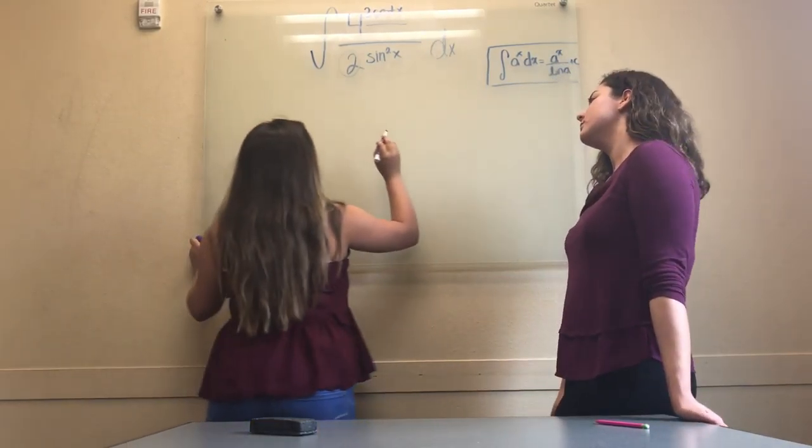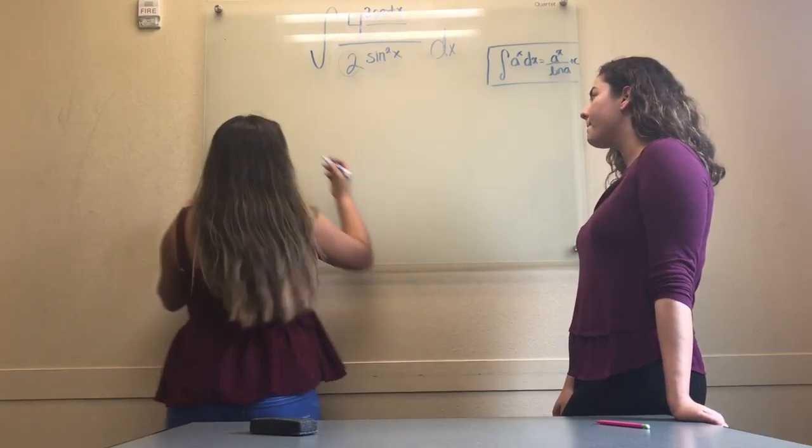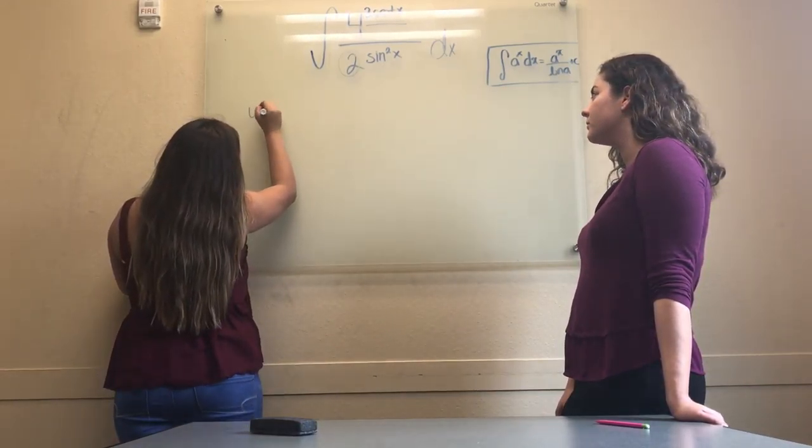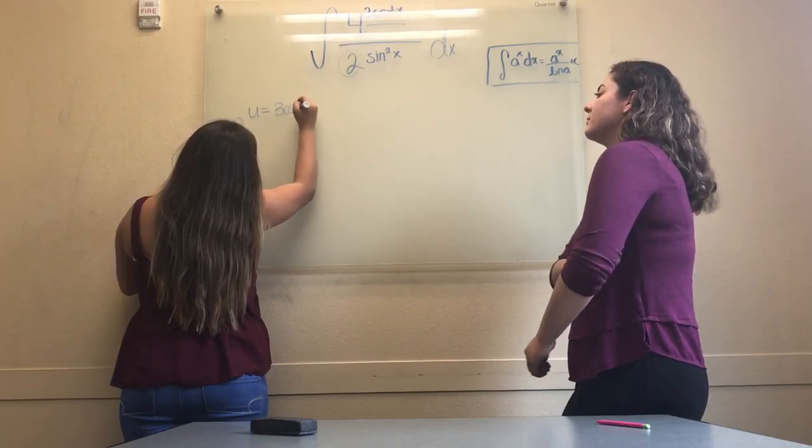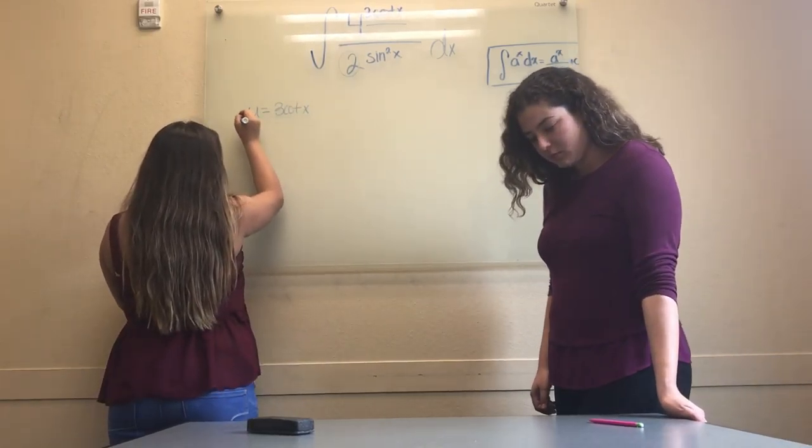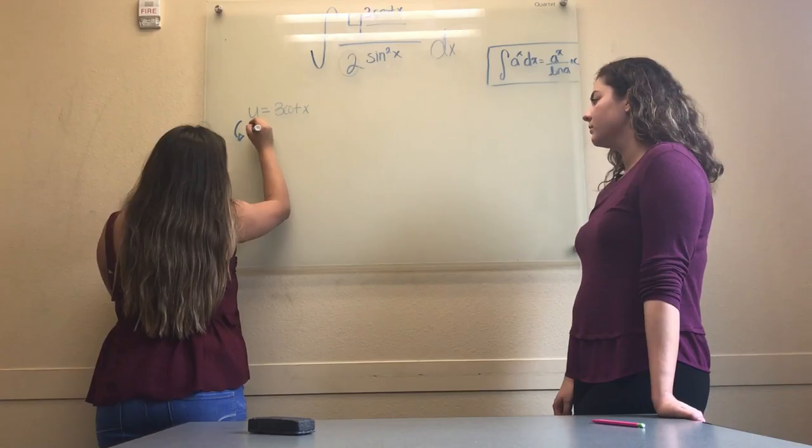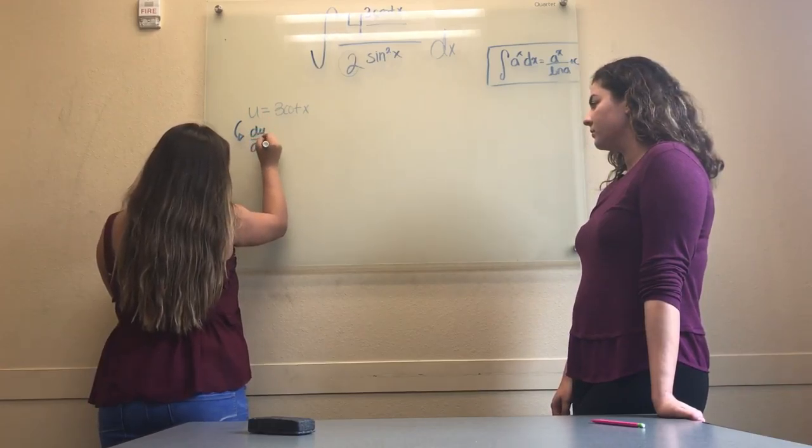As Andrea said, we'll be using exponential u substitution. In our case, u is 3 cotangent x. Immediately following the u, we find the derivative of u, which is du over dx.